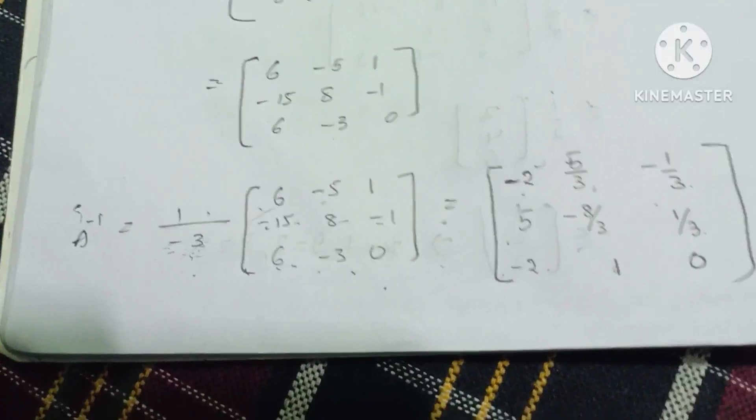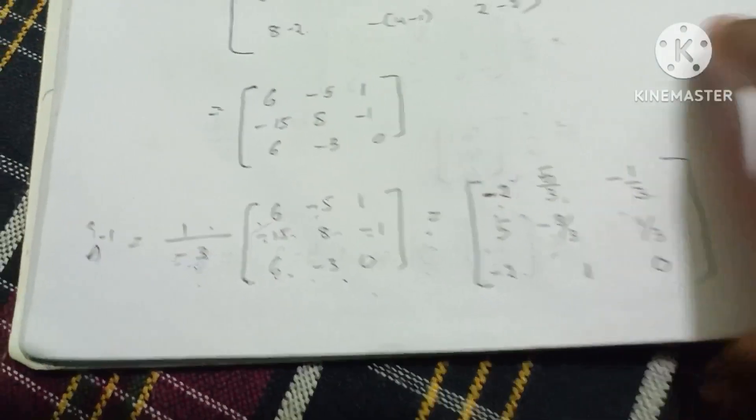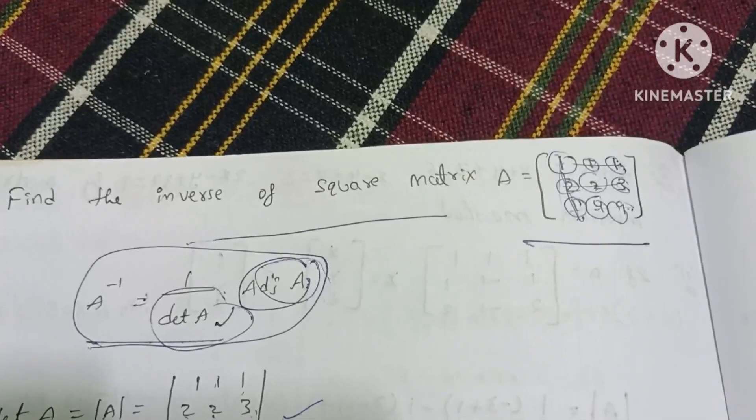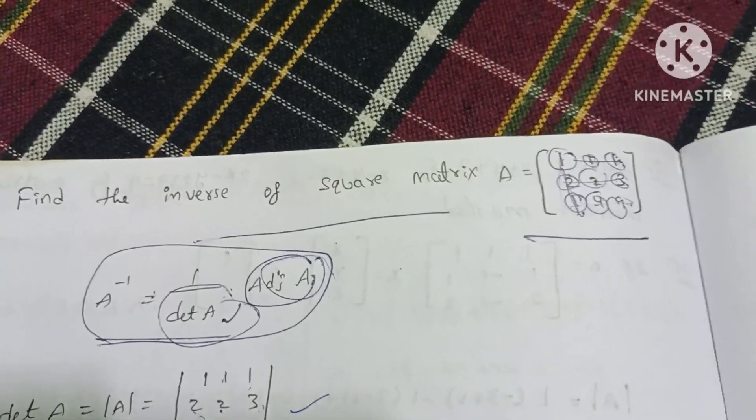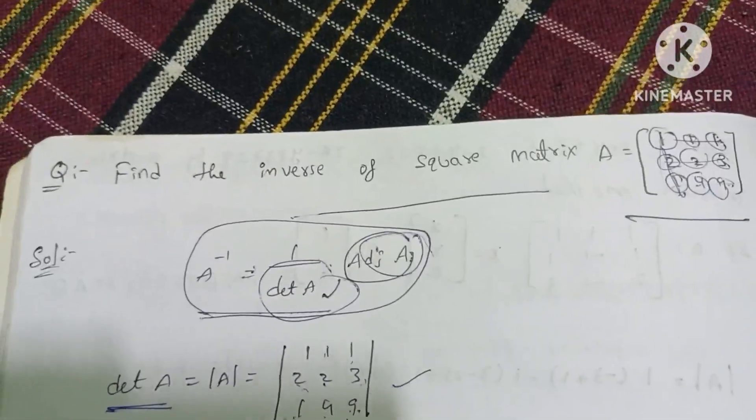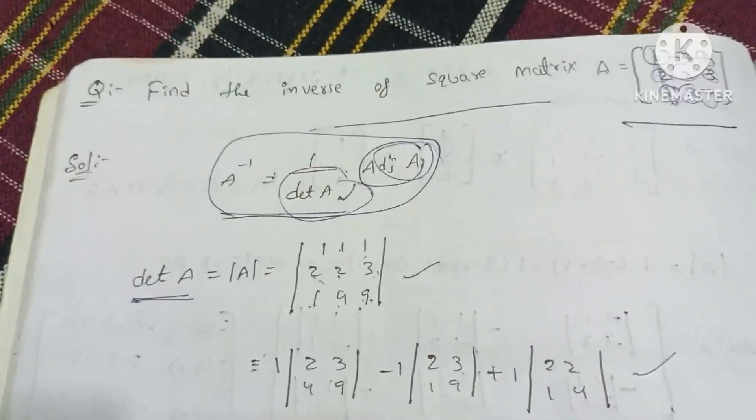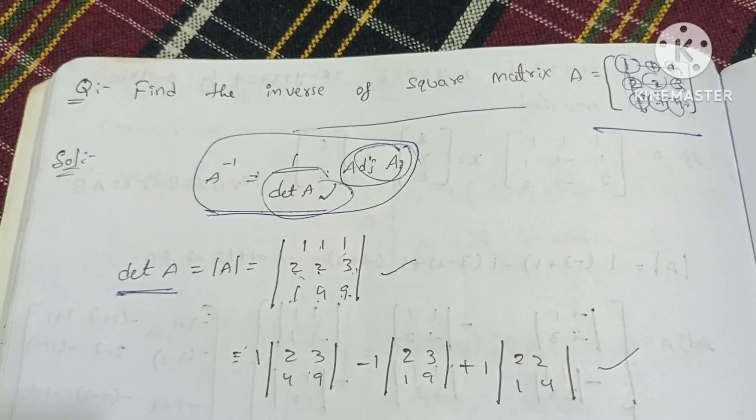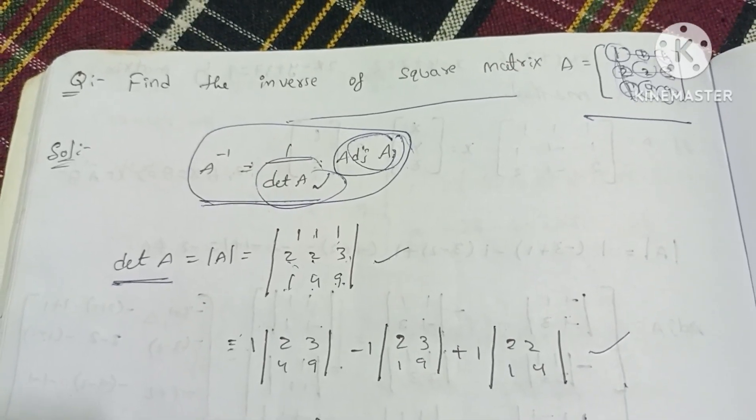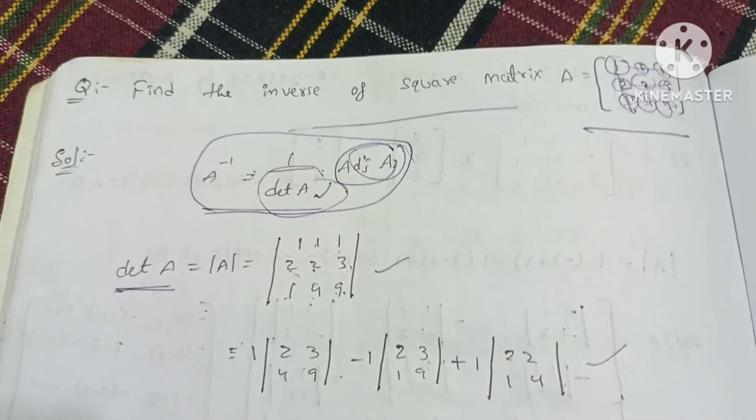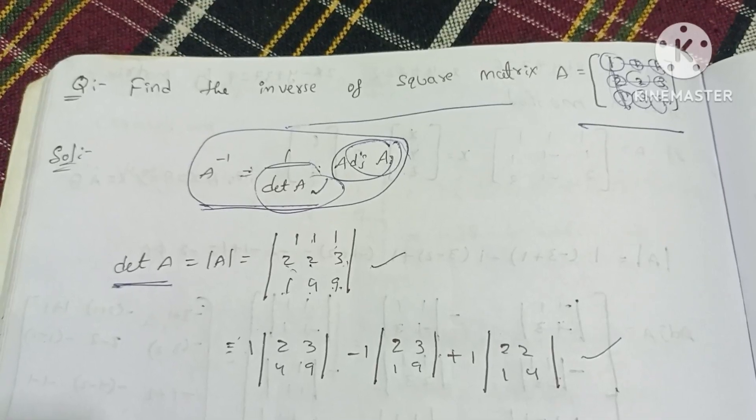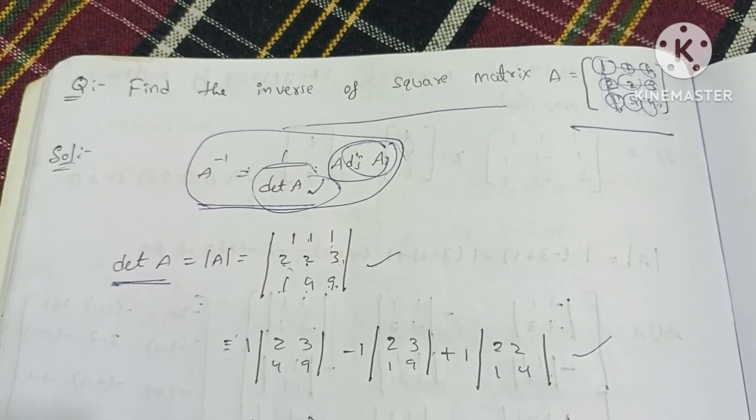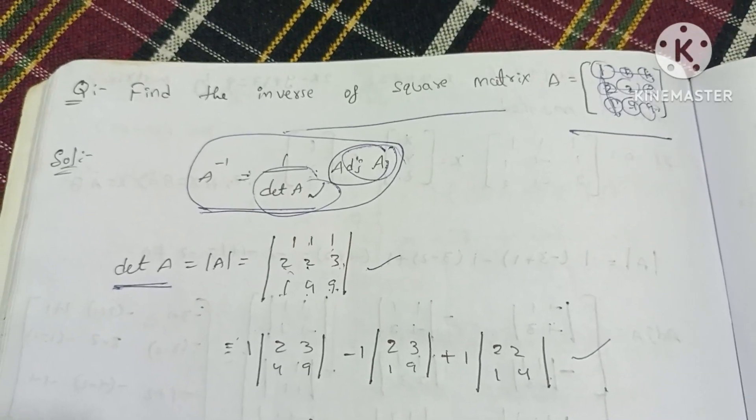So it is very easy to find out the inverse of the square matrix. It is very easy to find out the inverse of the square matrix.